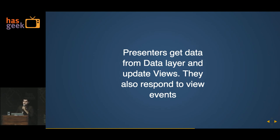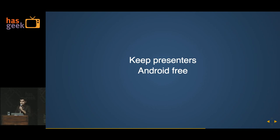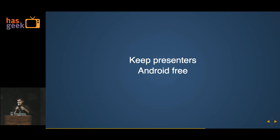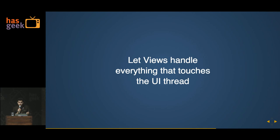Any user input has to always be on the view. This differs from other architectural patterns — for example in MVC, user inputs are handled by the controller. Here it's always handled by the view. One thing you have to remember is you have to keep your presenters and your models Android-free, otherwise this whole pattern doesn't work. The main thing we're trying to achieve is to isolate these layers — make your presenters and models non-Android so you can test them on the JVM without needing a device.